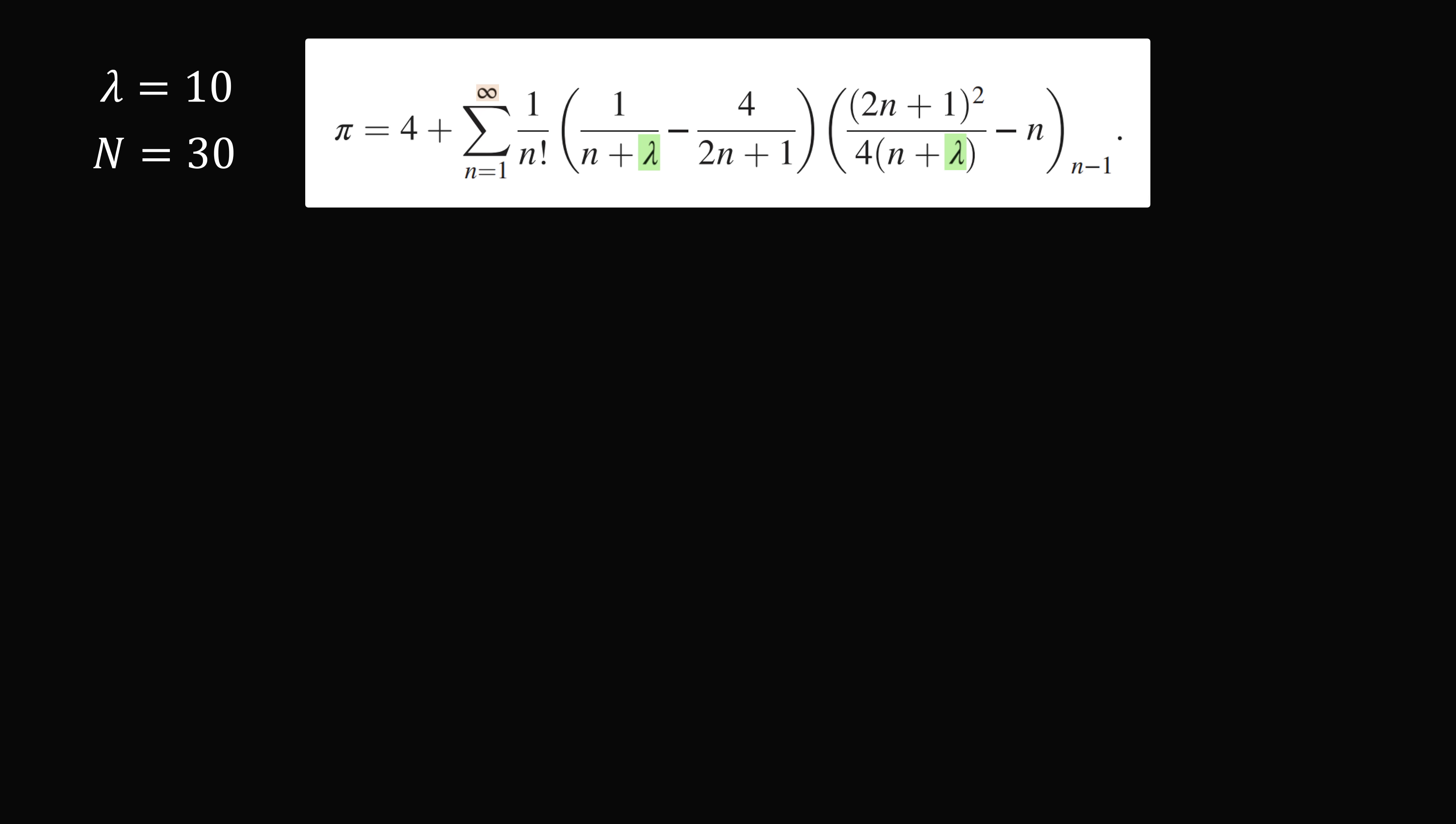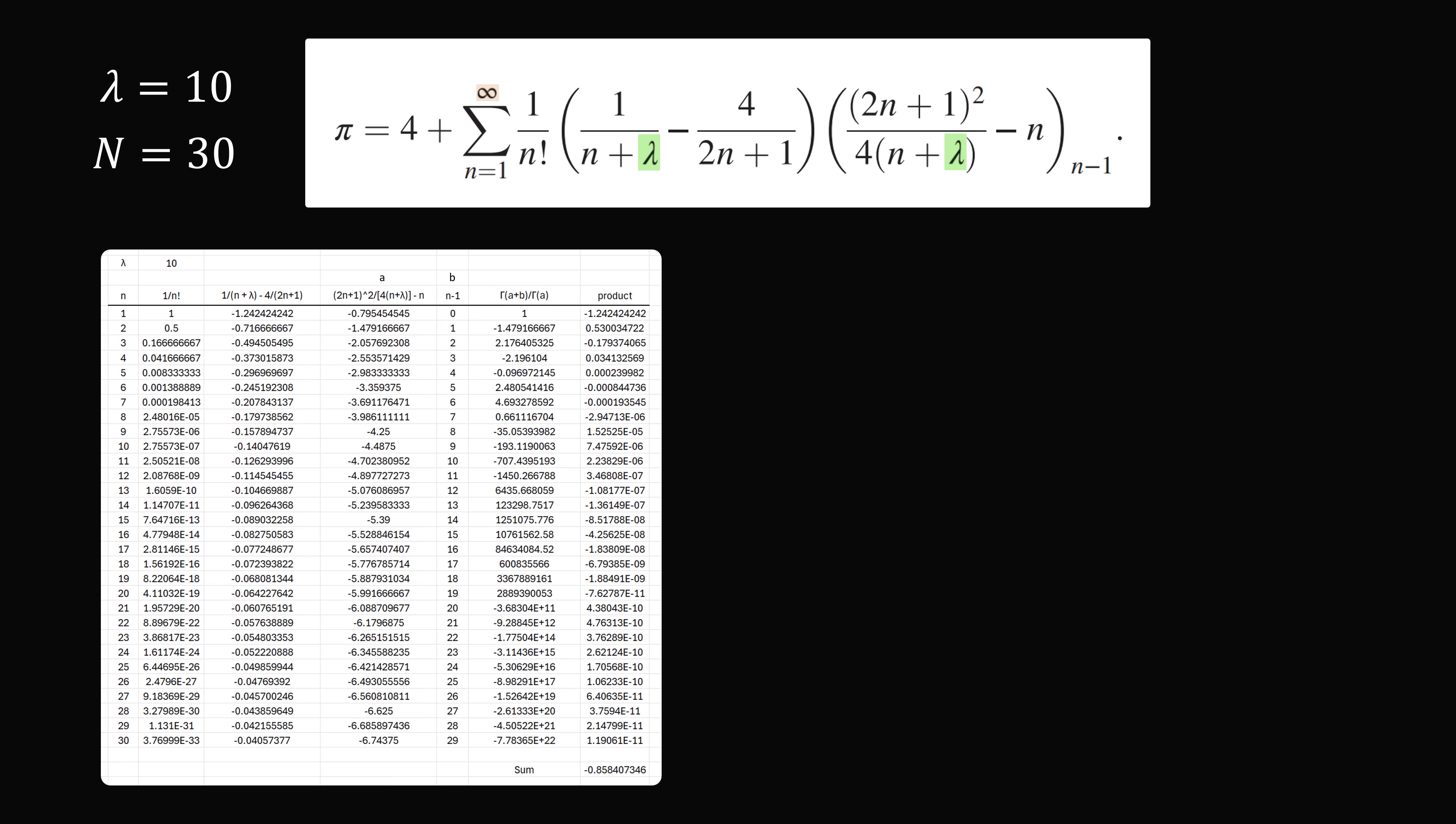we'll take an approximation and just truncate at 30 terms. Now all of these functions are built into spreadsheets. So you can actually just use this formula and come up with your own estimate for pi.